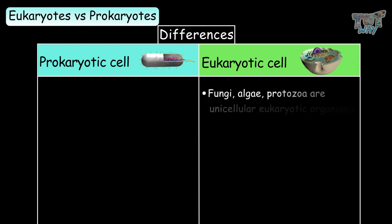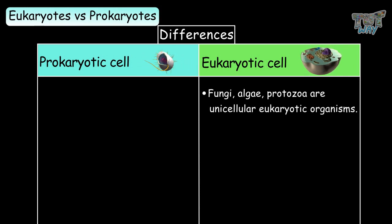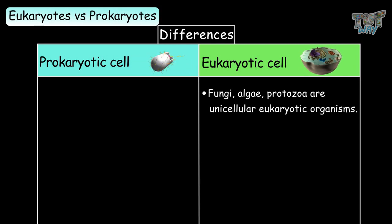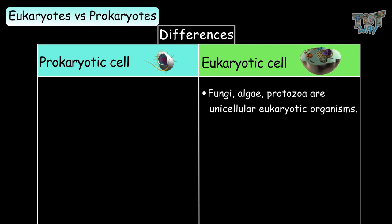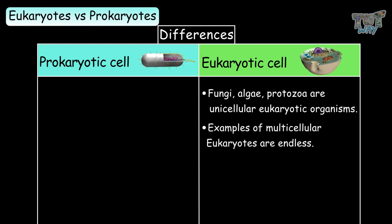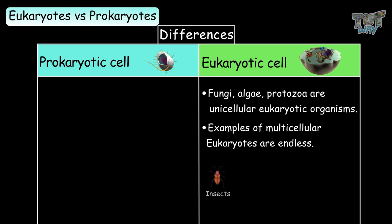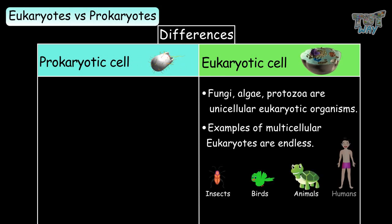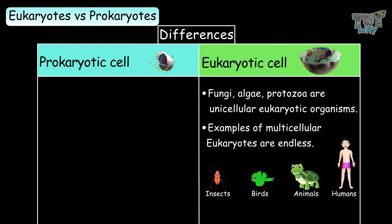Fungi, algae, and protozoa are unicellular eukaryotic organisms. Examples of multicellular eukaryotes are endless — all types of insects, birds, animals, and even humans are all eukaryotes with eukaryotic cells.